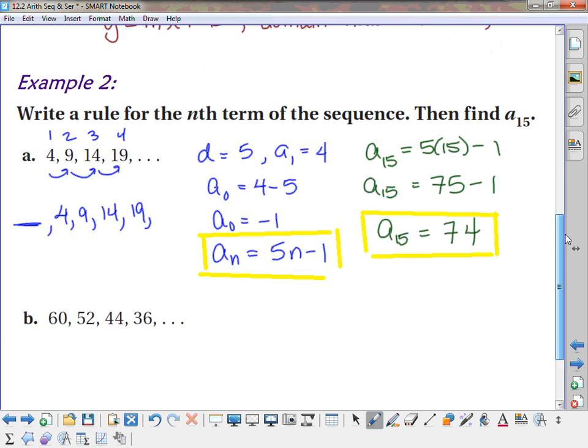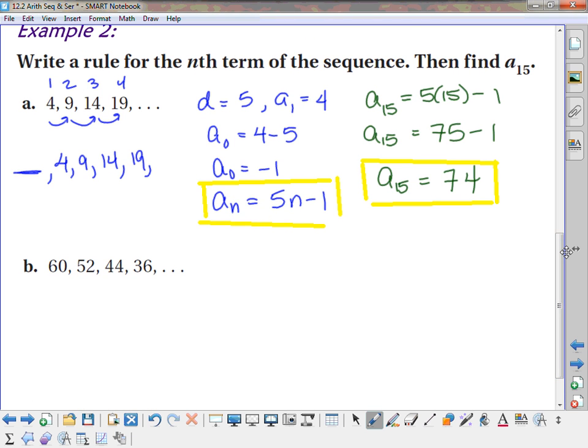All right, let's take a look at another one. Now I've got 60, 52, 44, 36. What's happening on that one? I am subtracting 8. So my difference for this one, or my slope, is negative 8. And I know a sub 1 is 60. So if I want to find a sub 0, I'm going backwards, right? So instead of subtracting 8, what should I do to a sub 1? Add the 8, right? So it's 68.